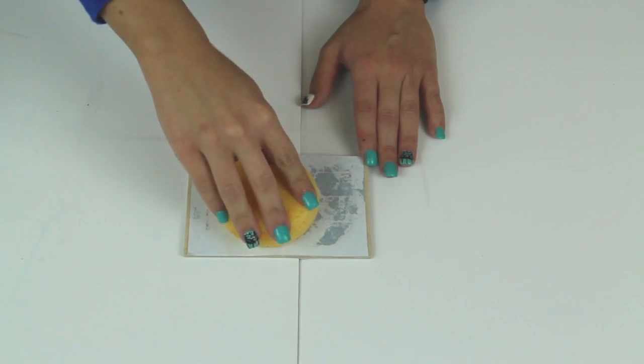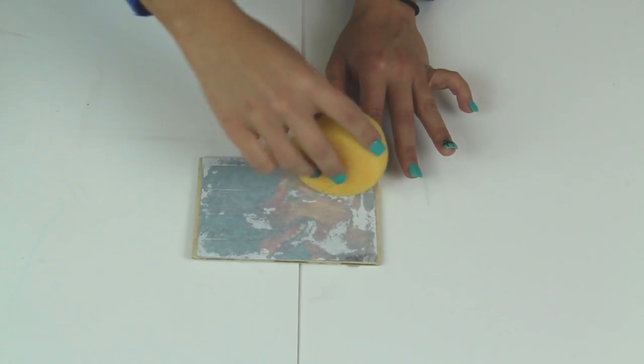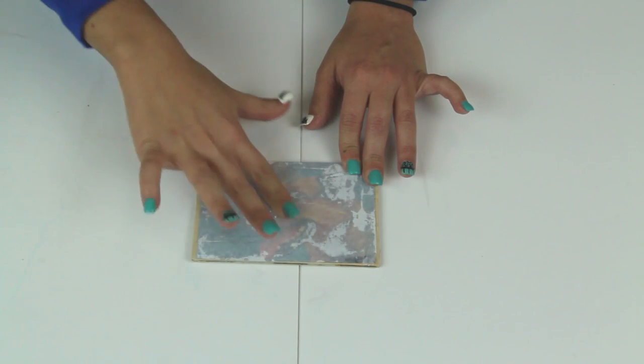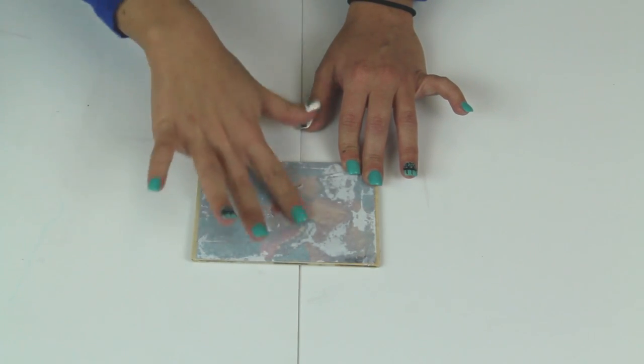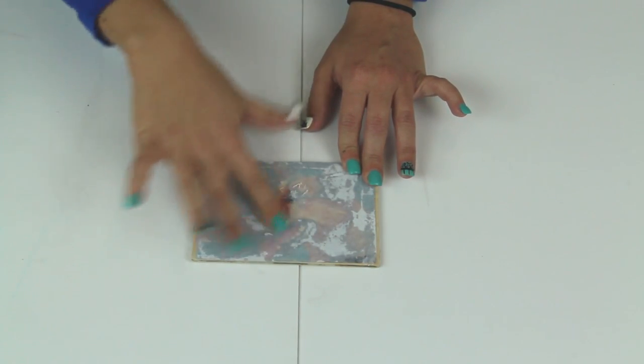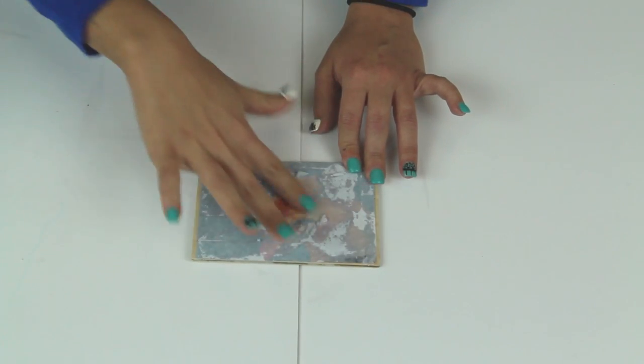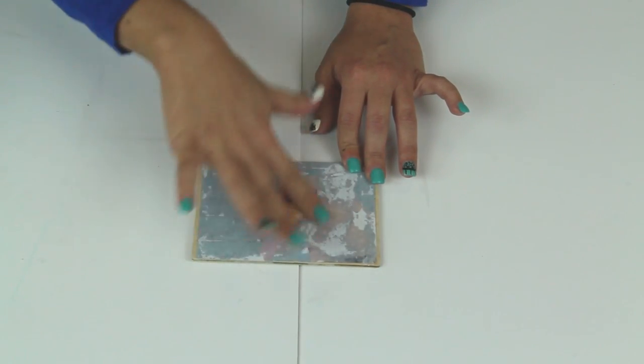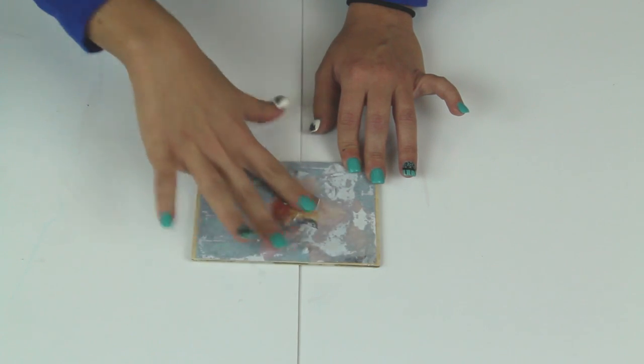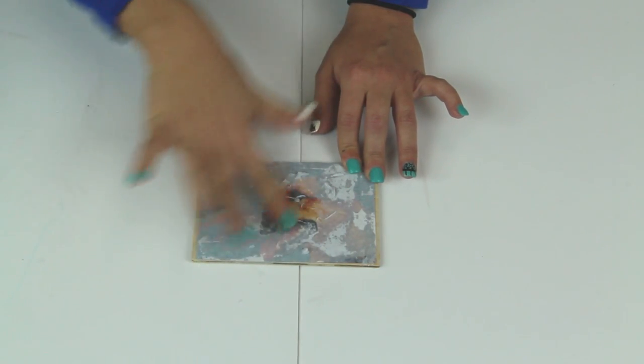Brush or sponge water onto the back of the image. Let it stand for two minutes. This will soften the paper, making it easier to rub away. Using your finger or a soft sponge, gently rub away the paper using circular motion. Do not rub back and forth.